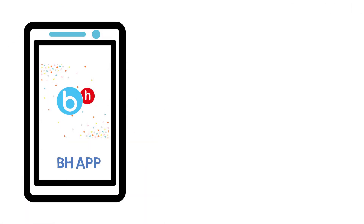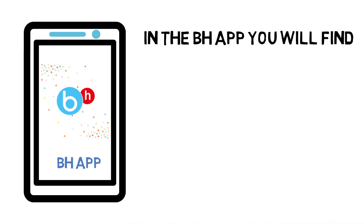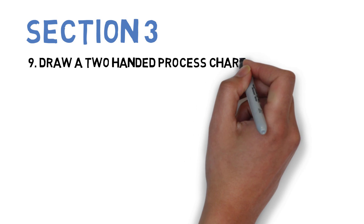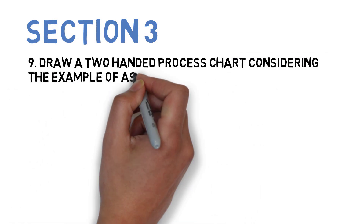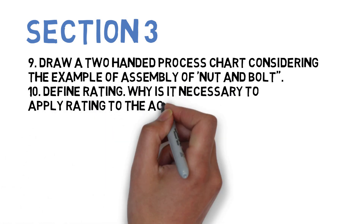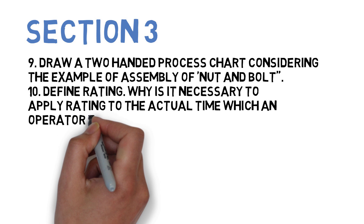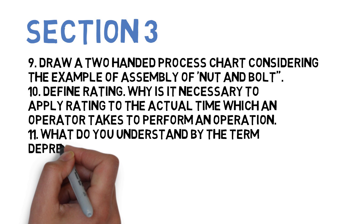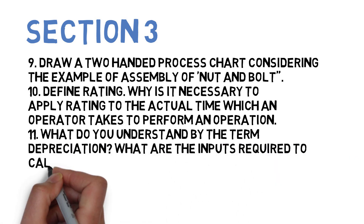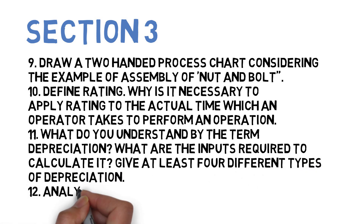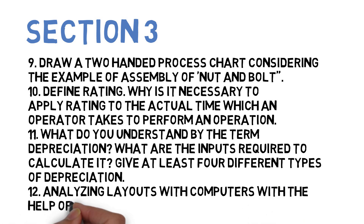For more questions and answers you can check out the Brain Eaters app. Now section three. First question: draw a two-handed process chart considering the example of assembly of nut and bolt. Second: define rating and why it is necessary to apply rating to the actual time an operator takes to perform an operation. Third: what do you understand by depreciation, what inputs are required to calculate it, and give at least four types. Fourth: analyzing layouts with computers using CORELAP.